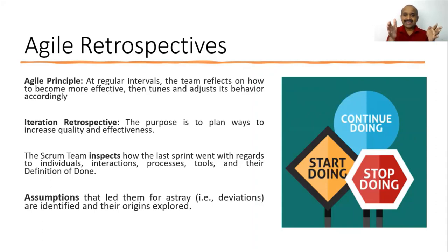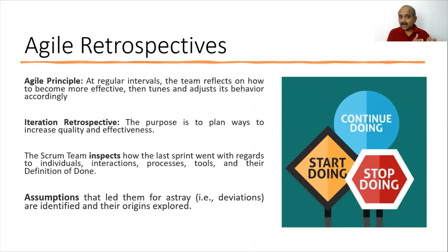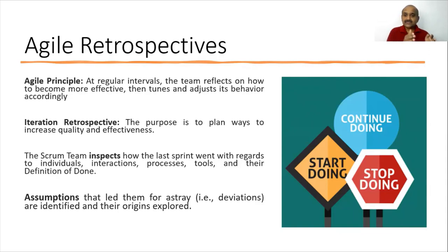In a period of two weeks, there is a working increment — the potentially shippable increment. We have to see whether we have reached the sprint goal. That means the planned stories as part of the sprint backlog — are we in a position to complete them as per the acceptance criteria and the product owner's perspective? Are we meeting the definition of done?